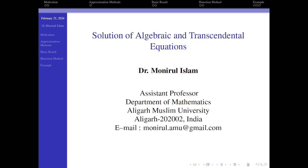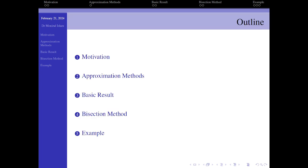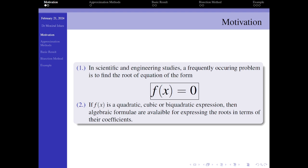These are the outline: first, why we give this talk and what is the motivation behind this talk, and then approximate methods and basic result and bisection method and example.